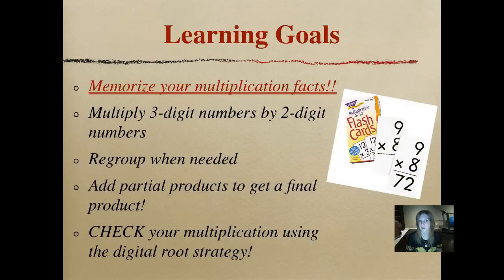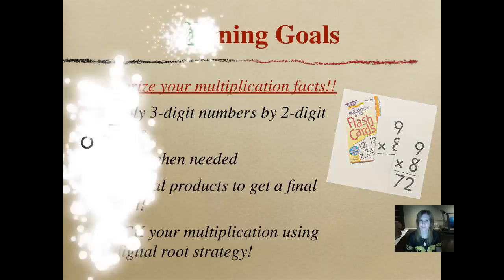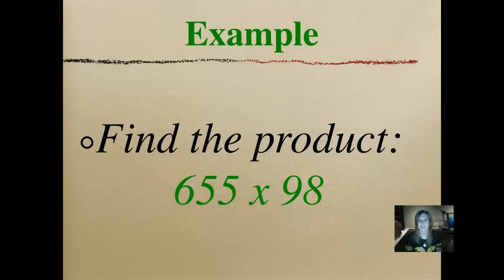Here are our individual lesson learning goals. We still have memorize your multiplication facts as one of our learning goals because we need to continue to work on that. Our multiplication will get easier and easier as we get faster at our facts. Multiply three-digit numbers by two-digit numbers, regroup when needed, add partial products to get a final product, and check using the digital root checking strategy. Let's first work an example. We did not have any vocabulary tonight that was new for us. So follow along as I work this problem.